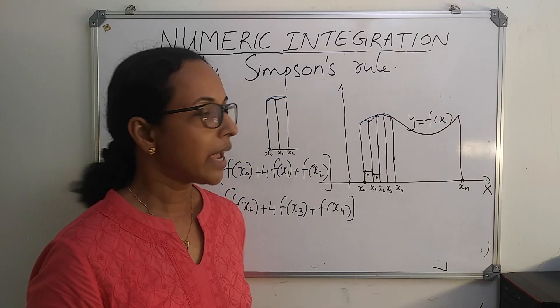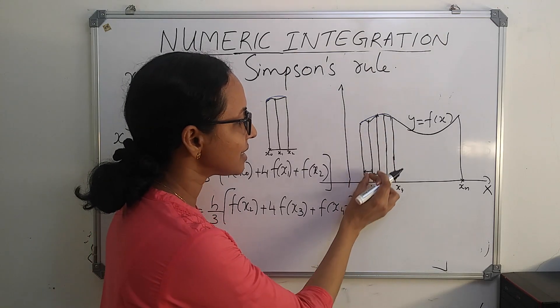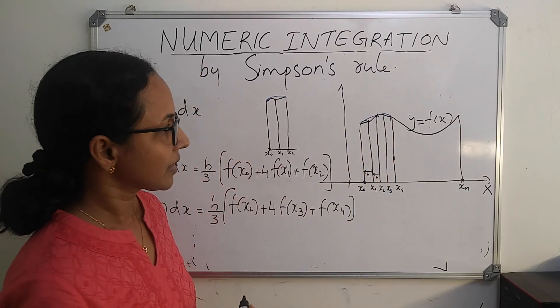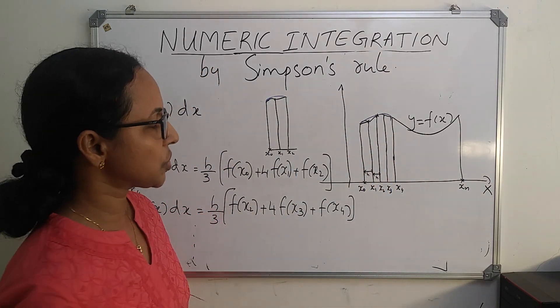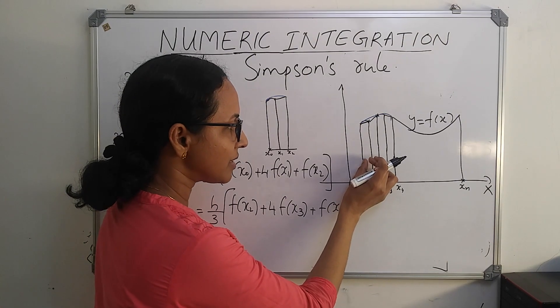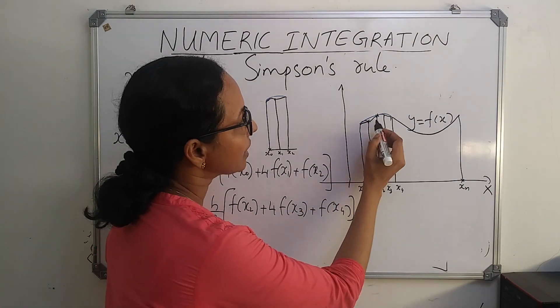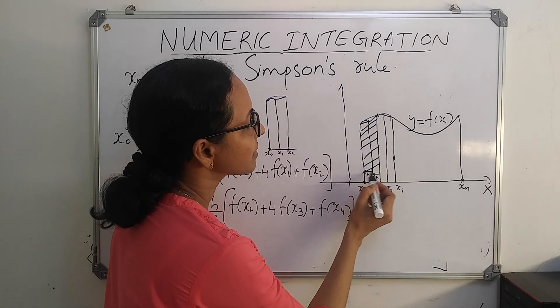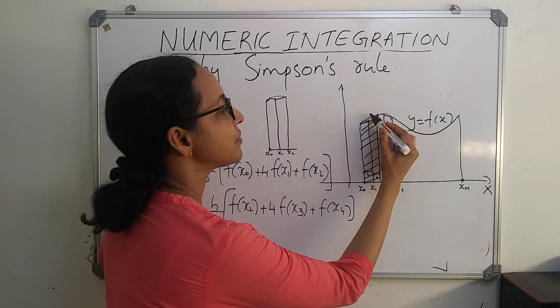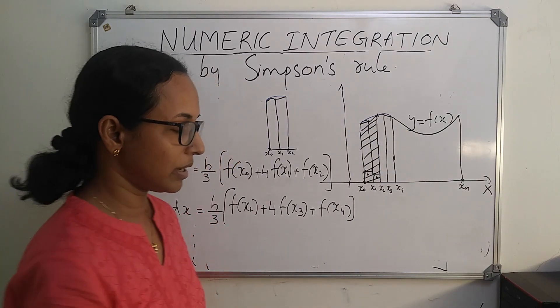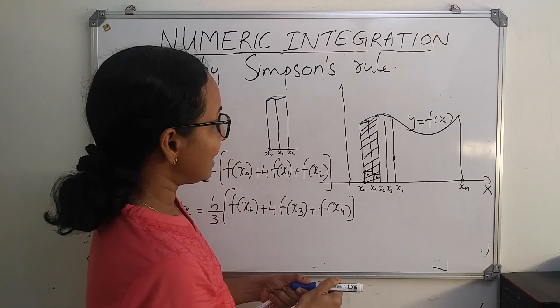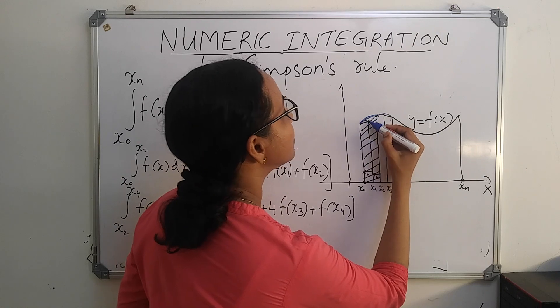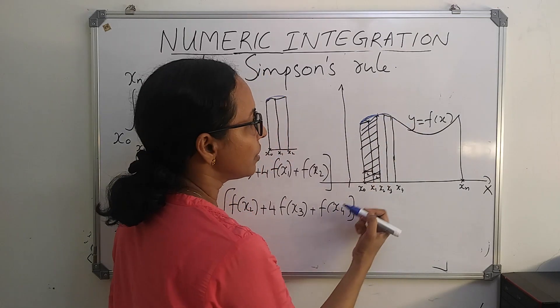In trapezoidal rule, we have approximated this region by a trapezoid by drawing a straight line. But in case of Simpson's rule, instead of considering one subregion, we will be considering these two regions together and approximating this one with the help of a parabola. Instead of drawing a straight line, we will be fitting a parabola that is passing through these three points.